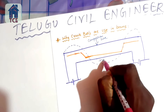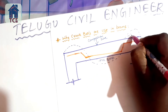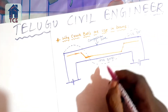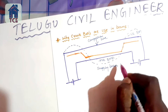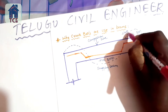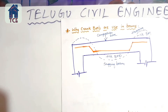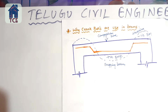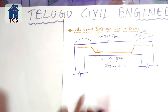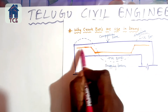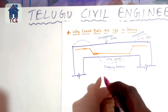This is the bending moment, and this is the negative action — the hogging beam. This is the sagging beam, and this is the negative bending moment. We are going to provide a crank bar on the beam. The crank bar is placed at 45 degrees.